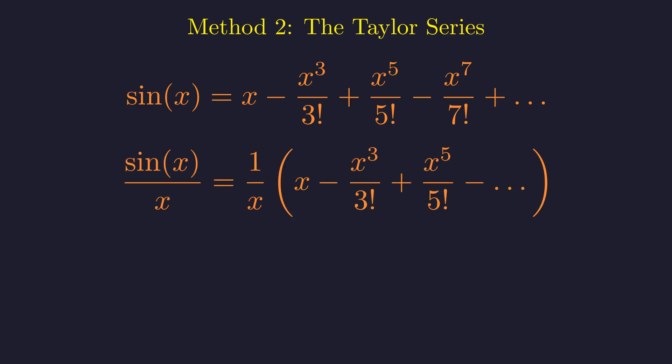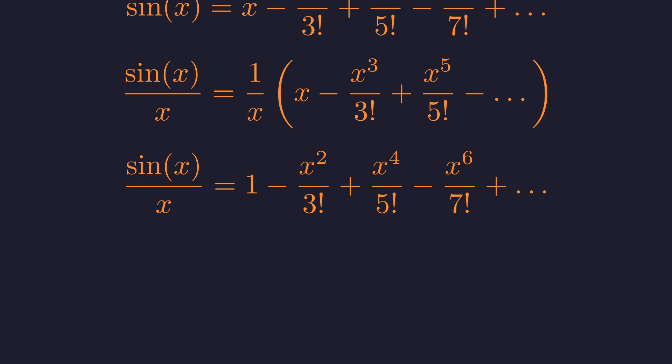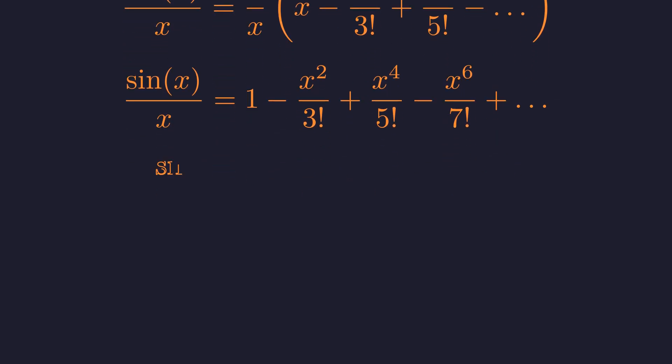We will divide the entire series by the variable x. Distributing the 1/x gives us this new series. And evaluating the factorials gives us the simplified form. Let's call this expression 2.